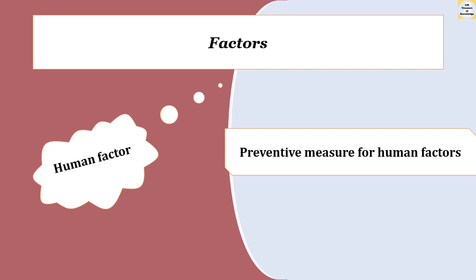Now we will see the factors that damage library material. The first is human factors like handling, storage, repairing and security. Valuable books and ancient or important manuscripts should be kept in specially organized cabinets or shelves. Use bookends to support books when shelves are not full. Books should not be shelved too tightly or too loosely. Care should be taken while photocopying books. Underlining must be avoided. For carrying a large number of books, a trolley should be used, and utmost care should be taken while handling or transporting rare, valuable and delicate books.